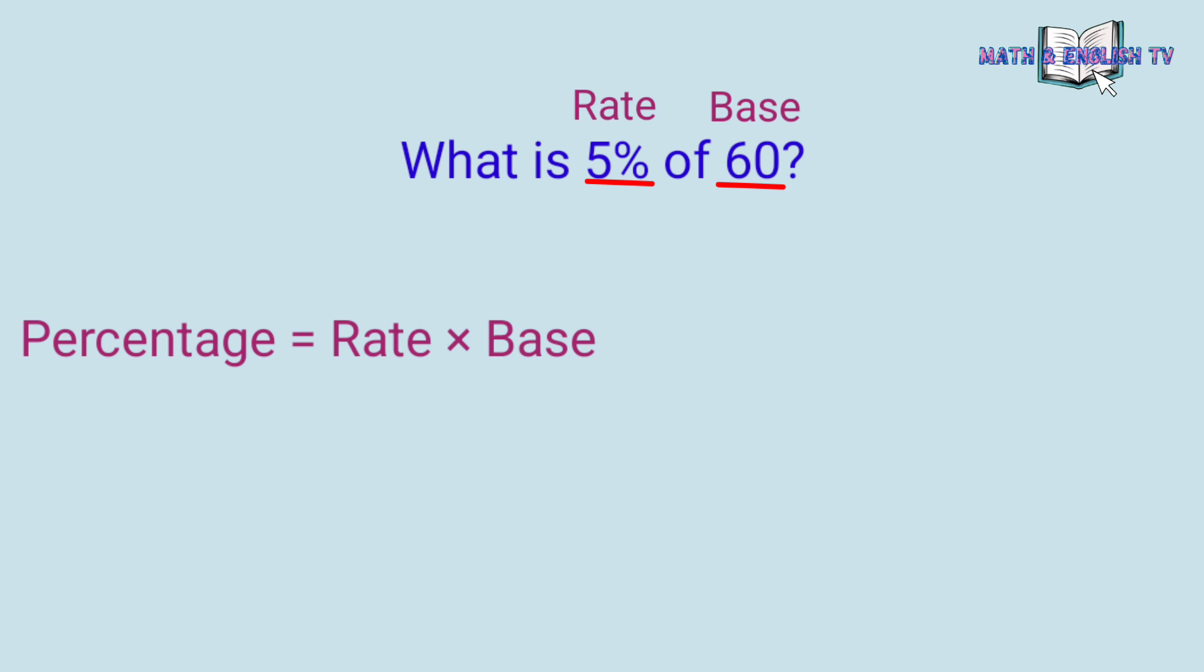Gawin natin. I-substitute lamang natin yung given numbers dito sa formula. Percentage equals yung rate 5% times yung base 60. Imumultiply lamang natin ito. Pero, itong 5%, i-change muna natin ito sa decimal number.